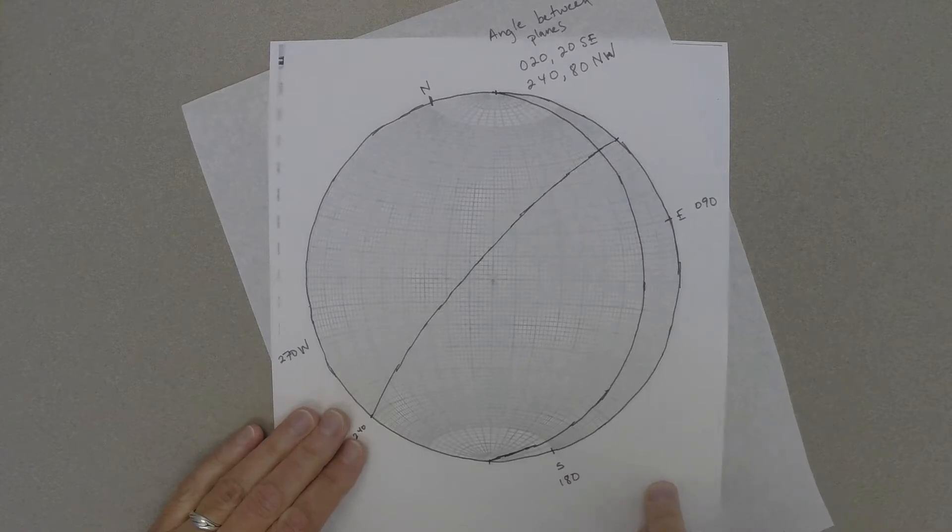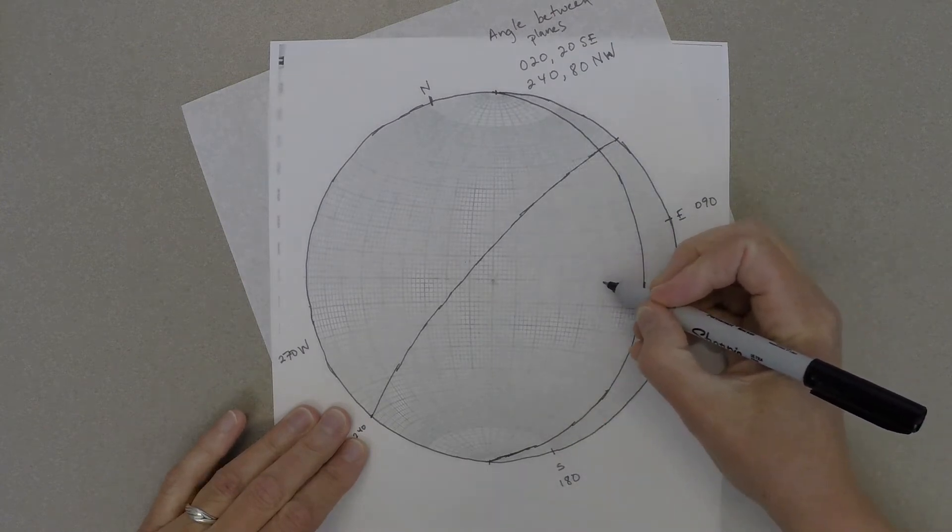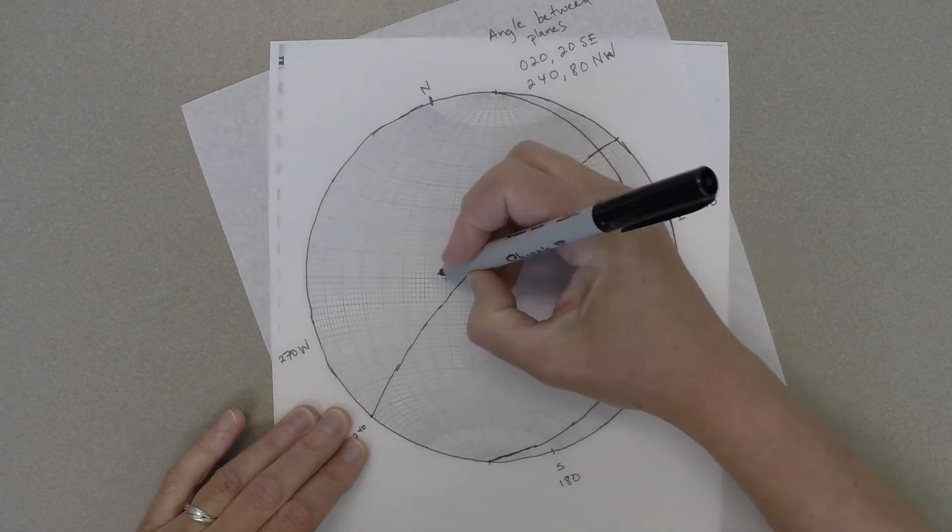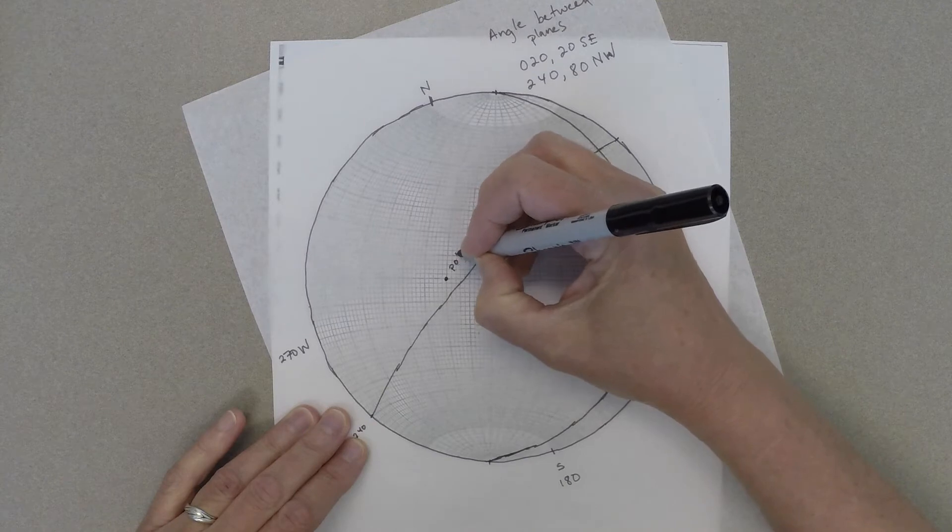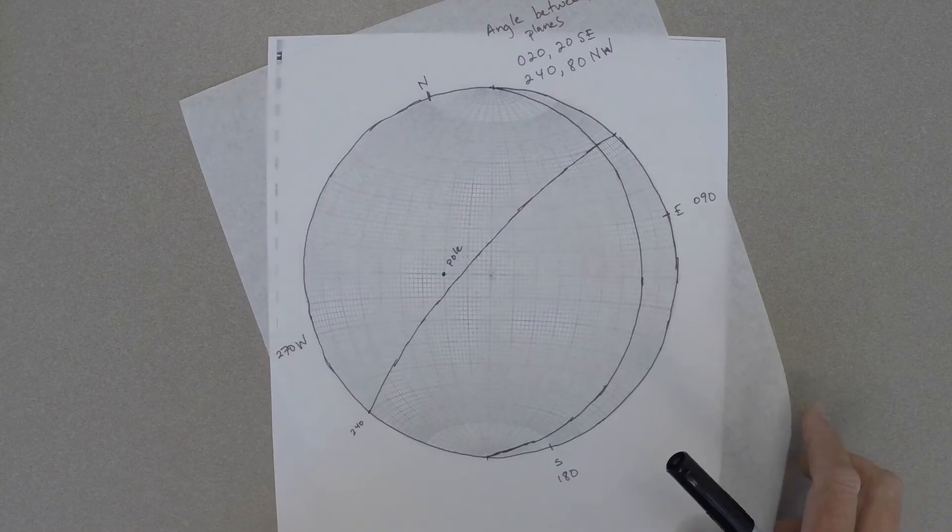To plot a pole to a plane, you start by lining up that plane with a great circle so that the strikes are north and south, and then counting 90 degrees across the equator and making a dot. Notice that that dot is not on the plane itself. So this is the pole to a plane striking 20 degrees and dipping 20 to the southeast.